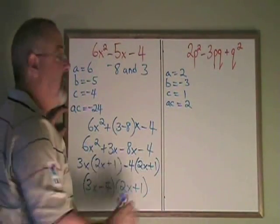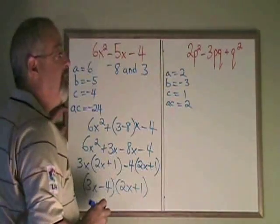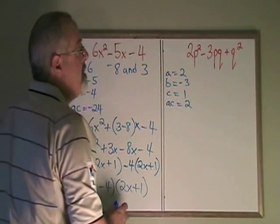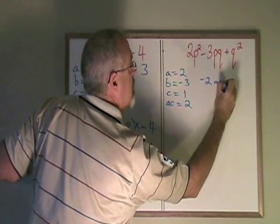Which two numbers multiply to give ac, multiply to give 2, and add to give negative 3? The b. They are negative 2 and negative 1.